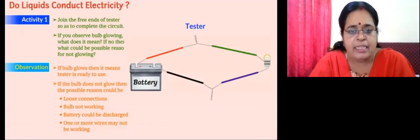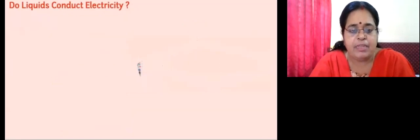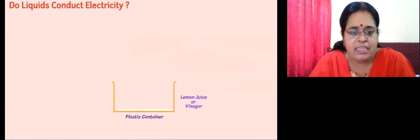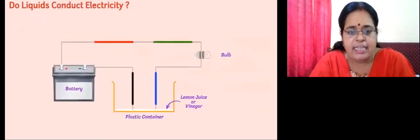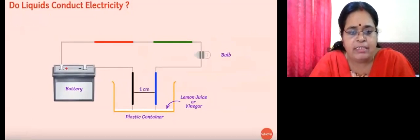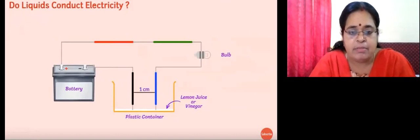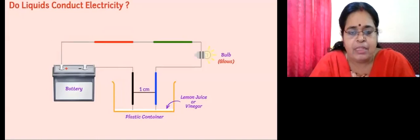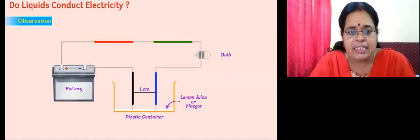Now let us continue with our topic: do liquids conduct electricity? Suppose we are doing an activity where you take a plastic container with some lemon juice or vinegar. You connect it with a battery, wires, and bulb, and two rods are dipped into the plastic container with a distance of about one centimeter between the rods. When current passes through the wires, the bulb glows. When the bulb starts glowing, we understand that electric current is passing through the wires, which means the liquid is conducting electricity.